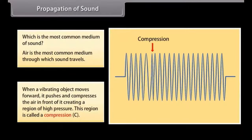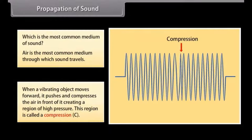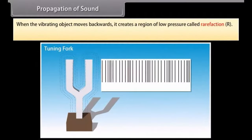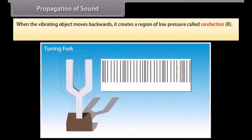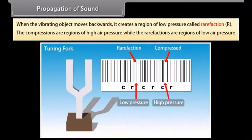When a vibrating object moves forward, it pushes and compresses the air in front of it, creating a region of high pressure. This region is called a compression. And when the vibrating object moves backwards, it creates a region of low pressure called refraction. The compressions are region of high air pressure, while the refractions are regions of low air pressure. Look at this image. It shows a sound wave created by a tuning fork and propagated through the air in an open tube. These are the regions of compression and these are the regions of rarefaction.